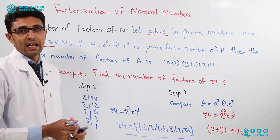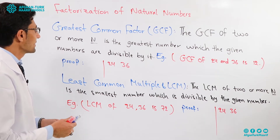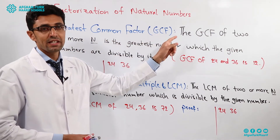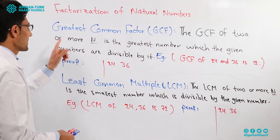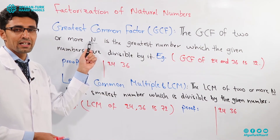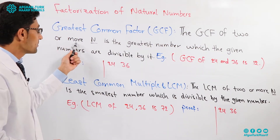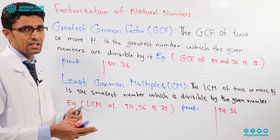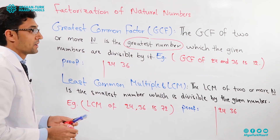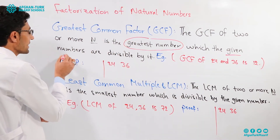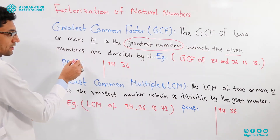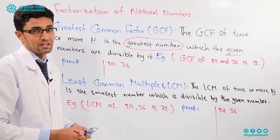Now we are going to study the Greatest Common Factor — in short, GCF. The GCF of two or more natural numbers is the greatest number which the given numbers are divisible by.